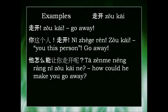The final example is 他怎么能让你走开呢. So 他怎么能 means 'how could he' or 'how is he able to do something', 让 means 'to make', 你走开 means 'you go away', and 呢 adds the inflection that it's a question. It's technically unnecessary but it flows better. So: 他怎么能让你走开呢 — 'how could he make you go away'. Thanks for watching.